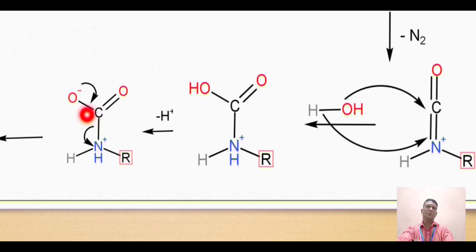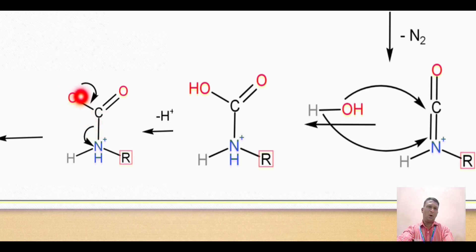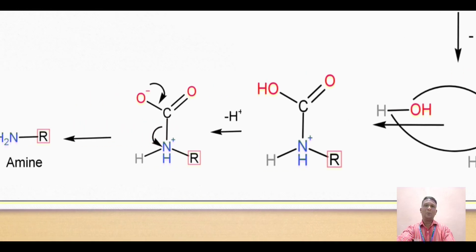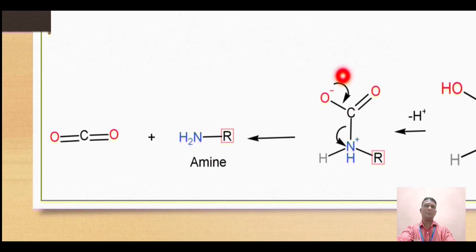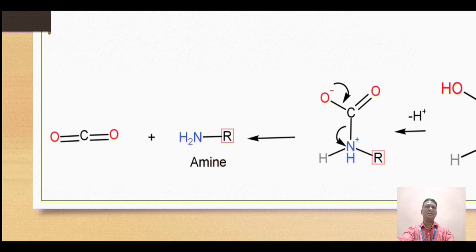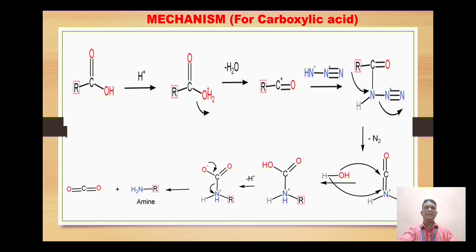The oxygen uses this lone pair to make a double bond with carbon, forming CO2 (carbon dioxide). As this bond forms, the bond between carbon and nitrogen breaks, giving formation of the primary amine. In this way, starting with carboxylic acid, we get the formation of the corresponding amine.